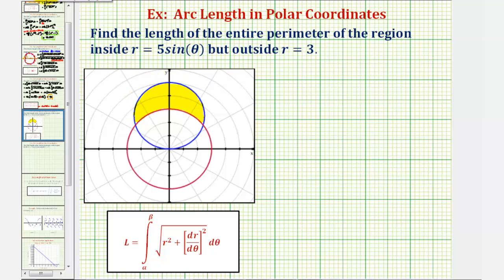Our goal is to find the entire length of the perimeter of this region, which would be this length and this length. We'll find this length using the arc length formula: L equals the integral of the square root of r squared plus dr d theta squared, integrated with respect to theta from alpha to beta.